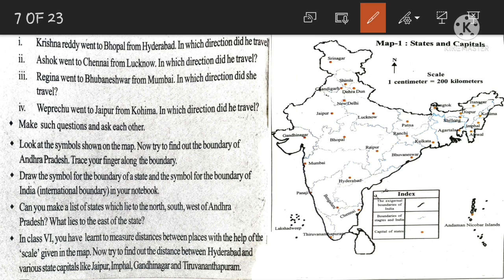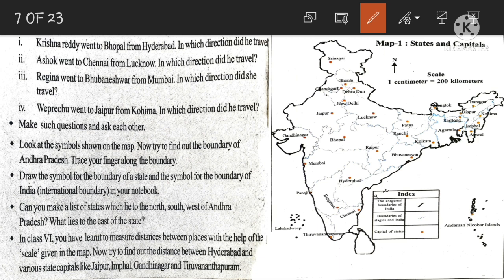To the North of Andhra Pradesh we have Odisha, Chhattisgarh, and Telangana. To the West of Andhra Pradesh we have Karnataka. To the South of Andhra Pradesh we have Tamil Nadu. To the East it is the Bay of Bengal.